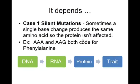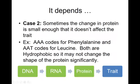In short, the answer is: it depends. Case one is silent mutations — sometimes a single base change produces the same amino acid, so the protein isn't affected. For example, the codons AAA and AAG both code for phenylalanine. So if a mutation changes that A to a G, it will change the DNA and the RNA, but it won't actually impact the protein or the trait.